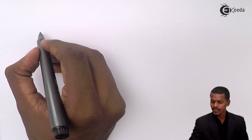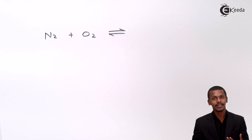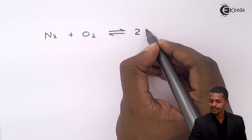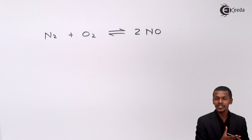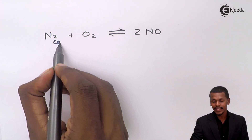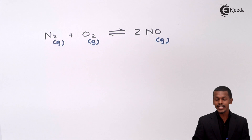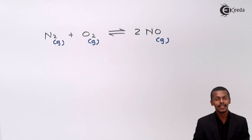For example, suppose nitrogen and oxygen react with each other to form nitric oxide — a reversible reaction reaching chemical equilibrium. The concentration of reactants and products becomes constant. Since nitrogen is in the gaseous phase, oxygen is also in the gaseous phase, and nitric oxide is also in the gaseous phase, the equilibrium mixture is a single homogeneous phase. This is an example of homogeneous equilibrium.